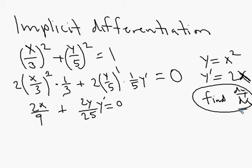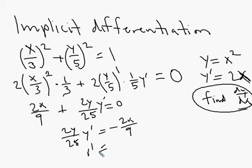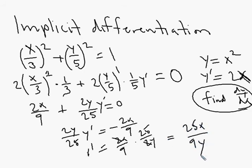We need to solve for y prime. Subtract 2x/9: so (2y/25)·y' = −2x/9. Then divide by 2y/25, or multiply by 25/2y. So y' = (2x/9)·(25/2y). The 2s cancel, and you get y' = −25x/9y.